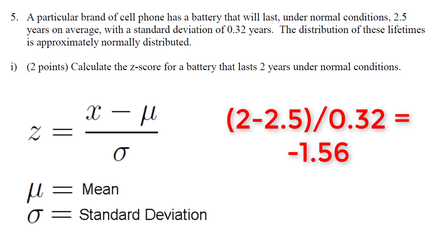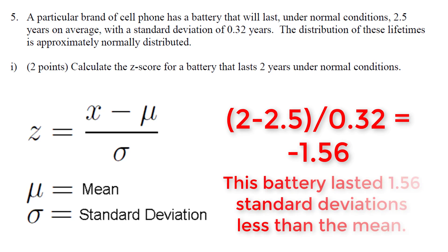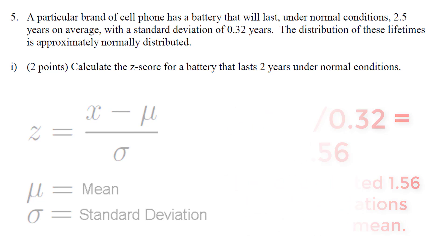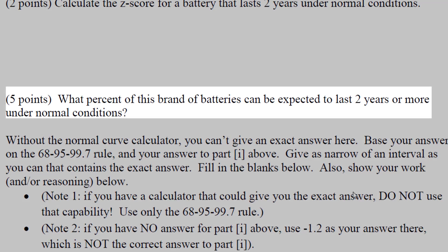Although this question doesn't ask us to do it, we can interpret this z-score. The interpretation would be: this battery lasted 1.56 standard deviations less than the average. The next question asks us to figure out what percent of this brand's batteries can be expected to last two years or more under normal circumstances.